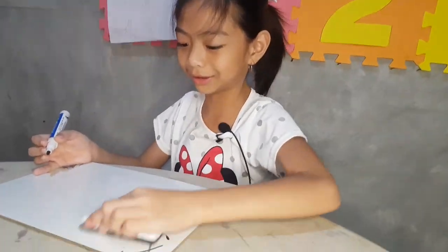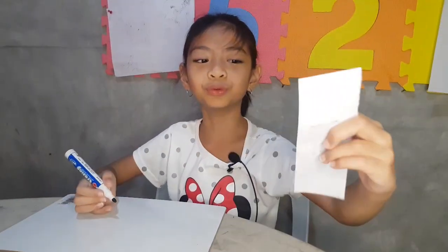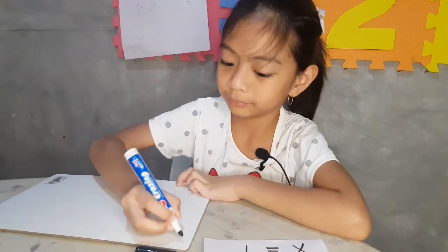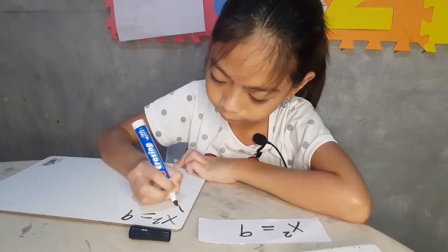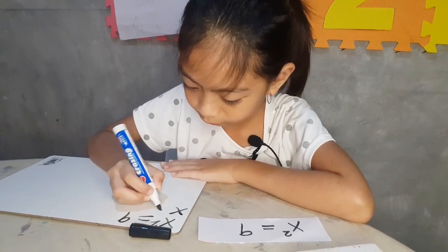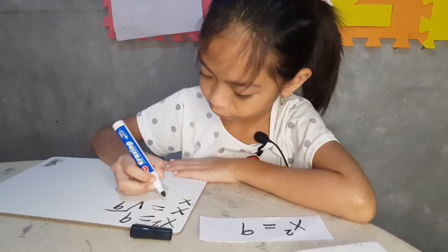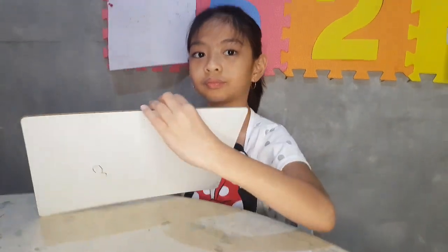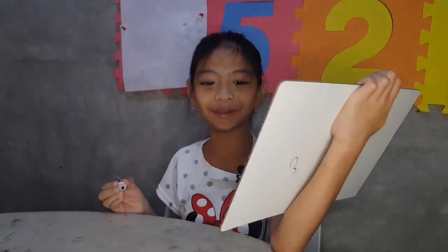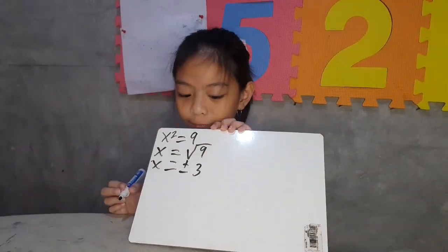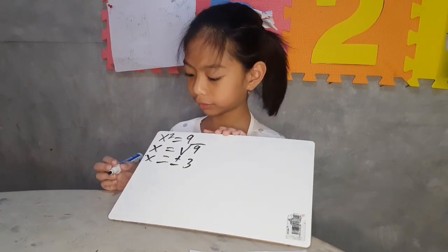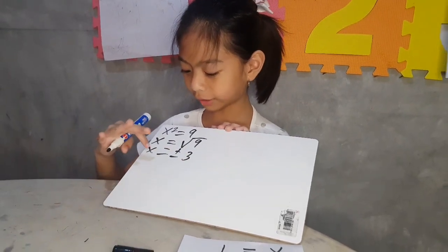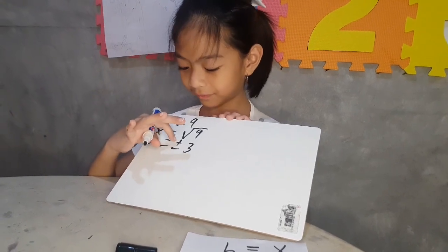Now last one. Very well — last one! Can you read it? X squared equals 9. Good job. Okay, can you read your answer? So X squared equals 9, X equals the square root of 9. X equals positive and negative 2.